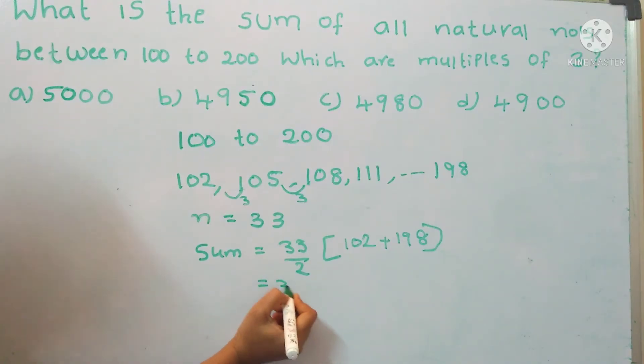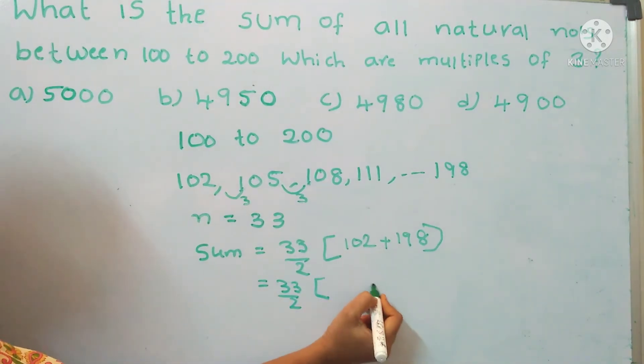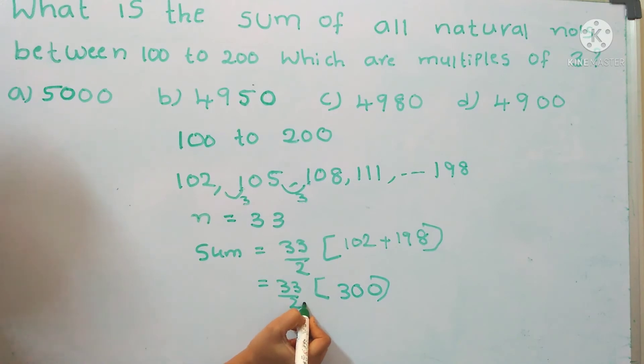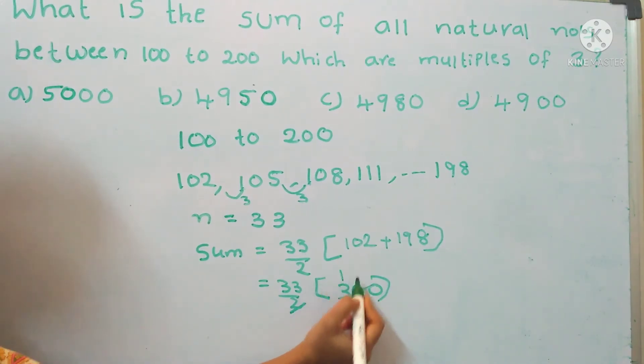So 102 plus 198 equals 300. So now, 33 by 2 into 300. That is 33 into 150, which equals 4950.